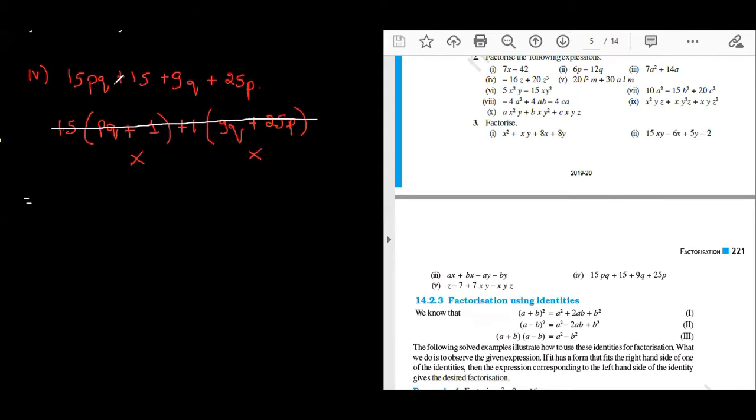What I will do, I will rewrite this question. Now, I will take first and third term together. How will I write: 15PQ plus 9Q plus 25P plus 15. Is this thing clear? I have shifted these two terms.